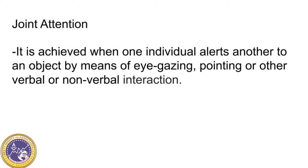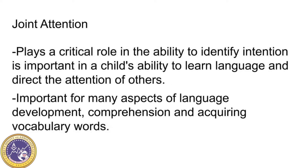Joint attention is achieved when one individual alerts another to an object by means of eye gazing, pointing, or other verbal or nonverbal interactions. Joint attention plays a critical role in social language development. The ability to identify intention is important in a child's ability to learn language and direct attention of others. It's important for many aspects of language development such as comprehension and acquiring vocabulary words.